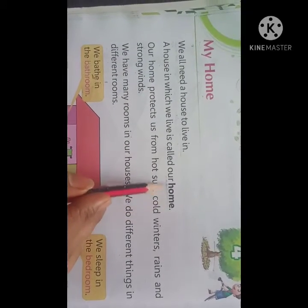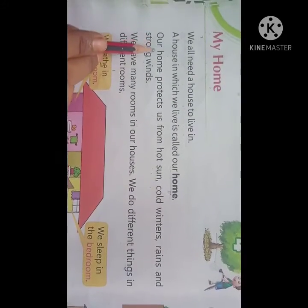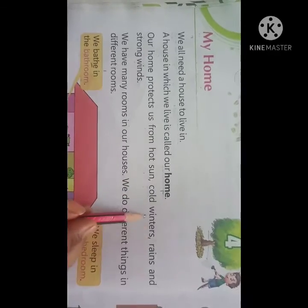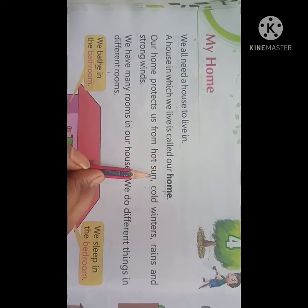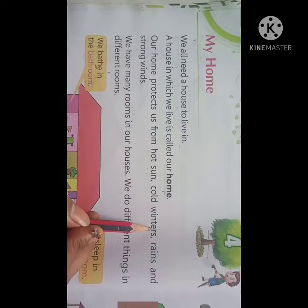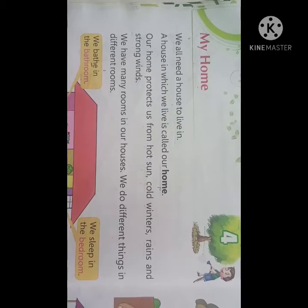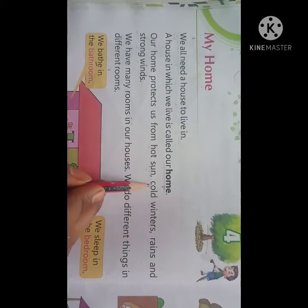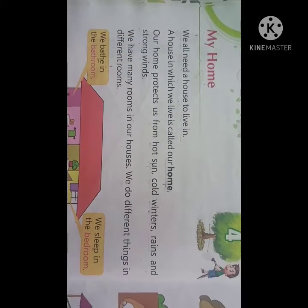Hamein apna ghar hota hai use hum kya bolte hain? House. Our home protects us from hot sun, cold winters, rains, and strong winds. Hot sun matlab garam suraj, cold winters matlab sardi se, rains matlab barish, and strong winds matlab aandhi se — jab hum ghar ke andar hote hain to hum surakshit rehte hain na?